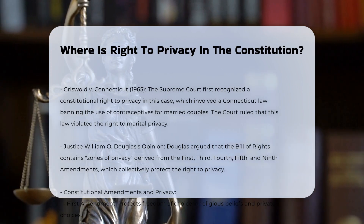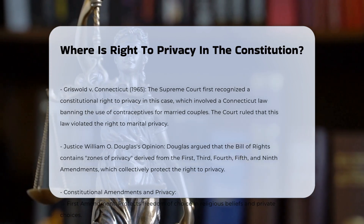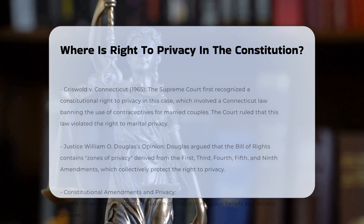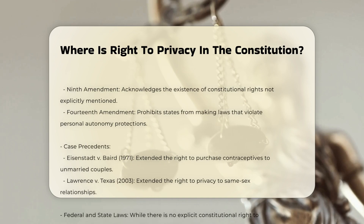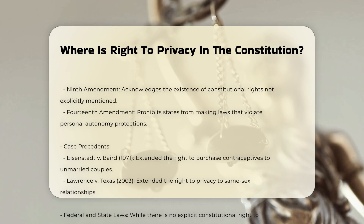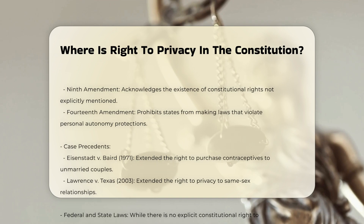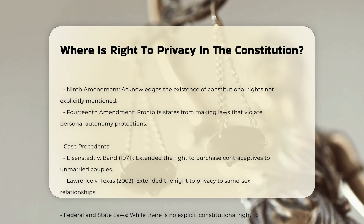Justice William O. Douglas found that the Bill of Rights contained zones of privacy derived from the First, Third, Fourth, Fifth, and Ninth Amendments.